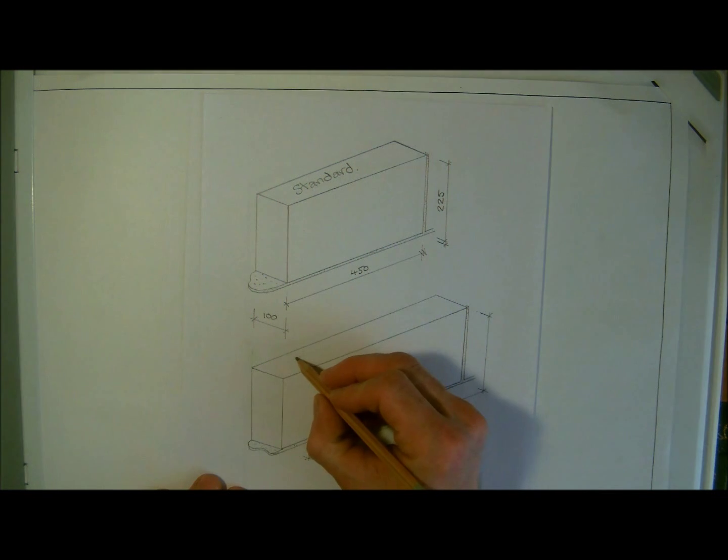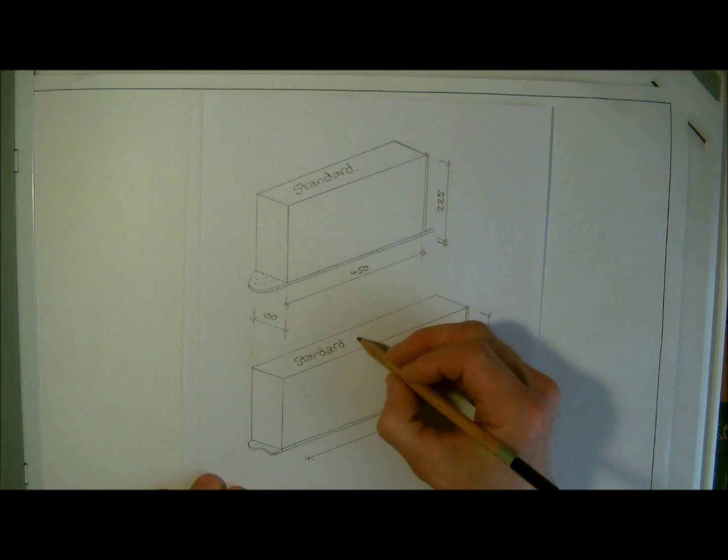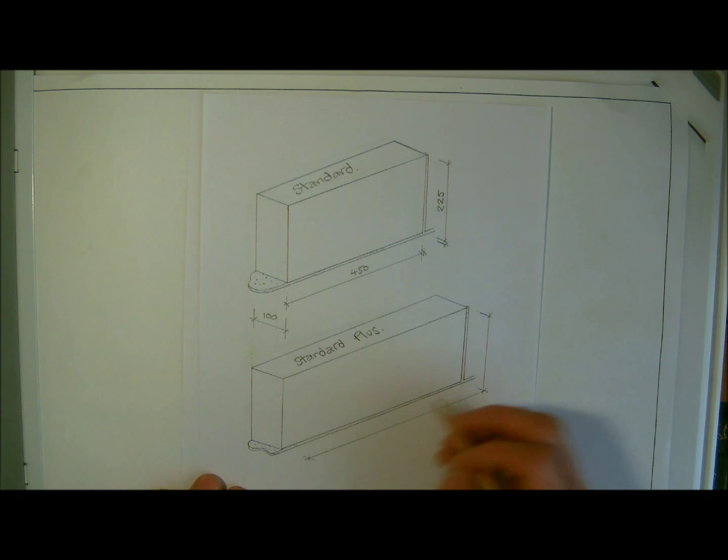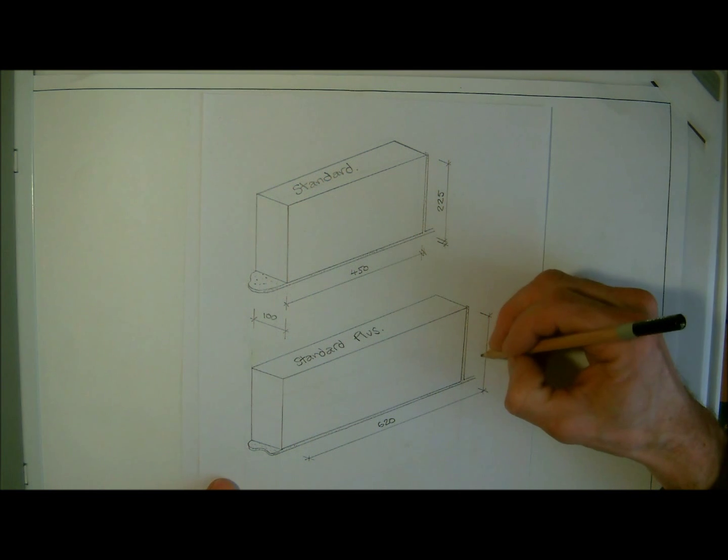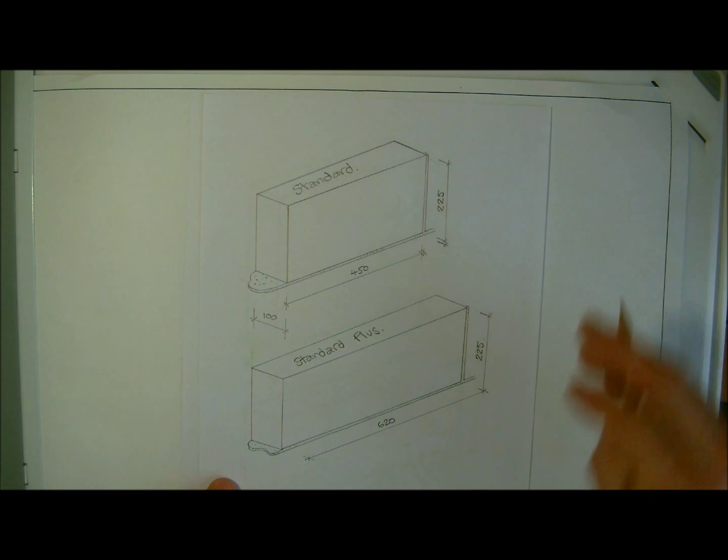Then you have the standard plus, which is a very common block nowadays. Standard plus, and these are, with a joint, these are 610, but with a joint they're going to be 620 long. And again, they're going to be 225 tall.